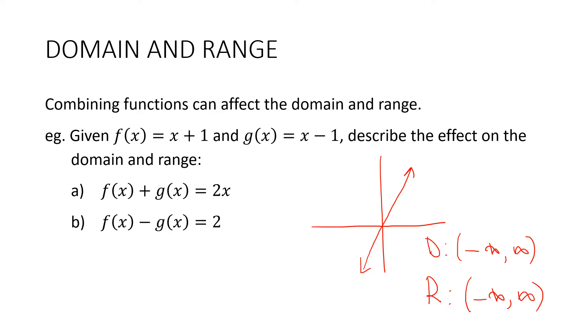With b, we had the line y = 2. And it has the same domain, all real x or negative infinity to positive infinity. But the range is different. The range in this case is only one number, y = 2.